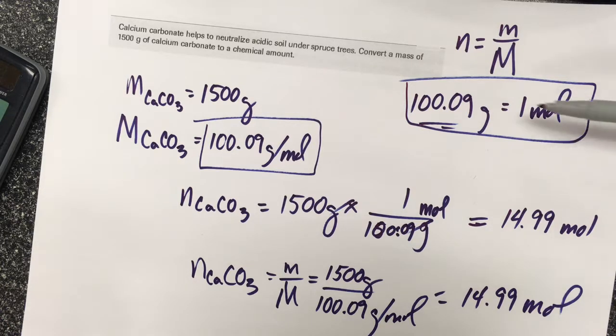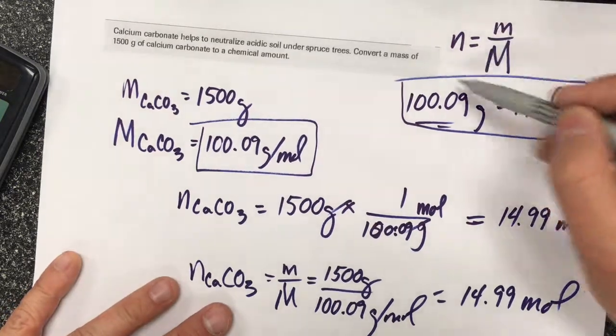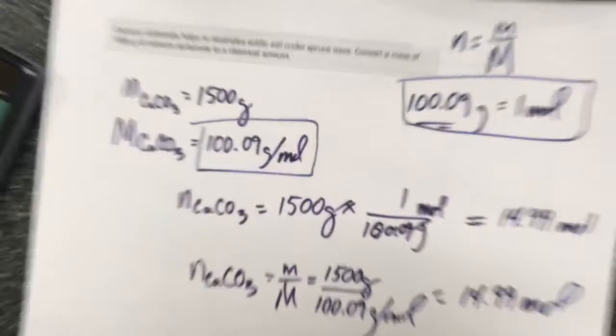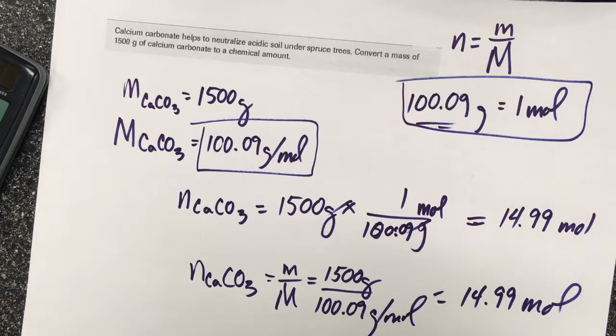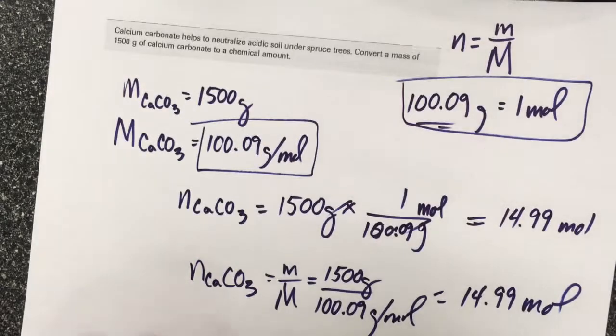This is arguably maybe the worst sounding formula ever - n = m/M - it's not super memorable, but it is used so frequently that you should be able to remember it.